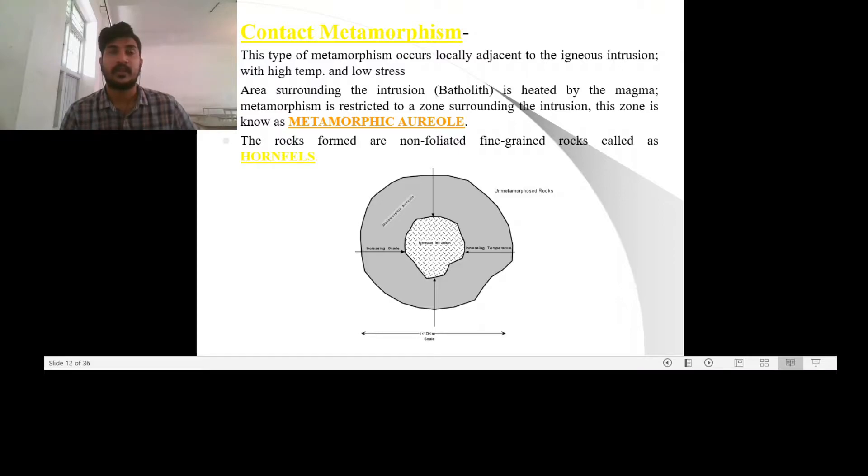So the metamorphism is only limited to that particular area. And the area or the zone where the contact metamorphism has taken place is known as a contact aureole or a metamorphic aureole. And as you can see, the metamorphic grade will increase from all directions towards the igneous intrusion.